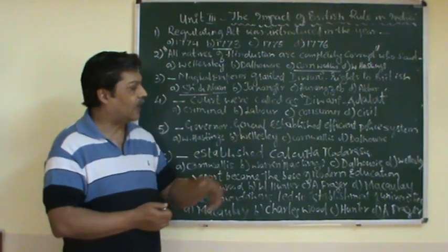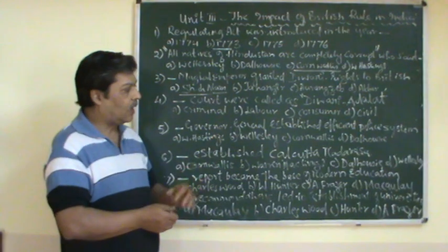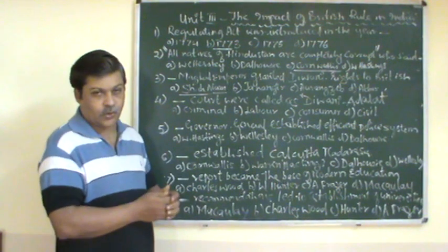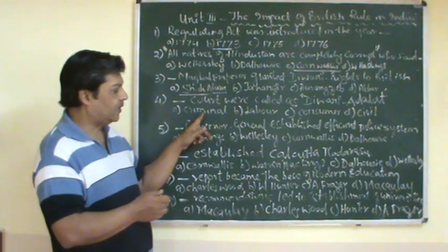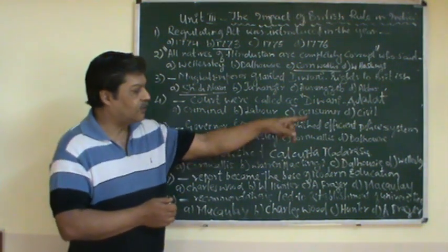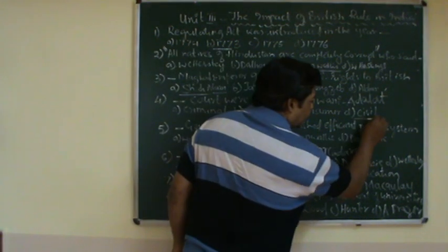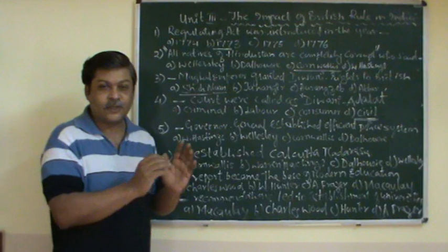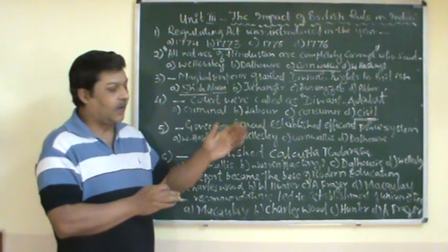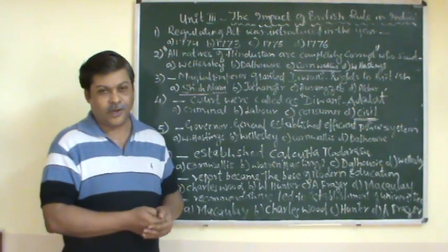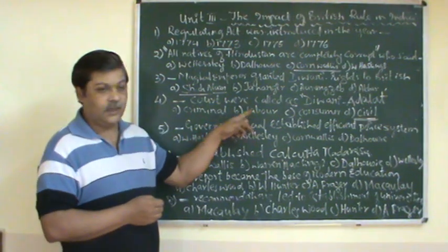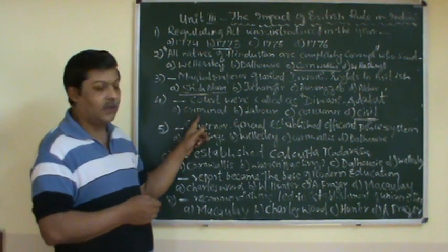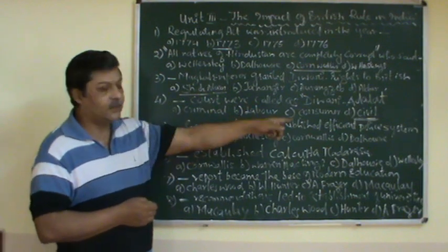Which courts were called Diwani Adalat? These were established during the Governor Generalship of Warren Hastings. The choices given are Criminal Court, Labour Court, Consumer Court, and Civil Court. The answer is Civil Court — the Civil Court is known as Diwani Adalat. The Criminal Court was known as the Faujdari Adalat.